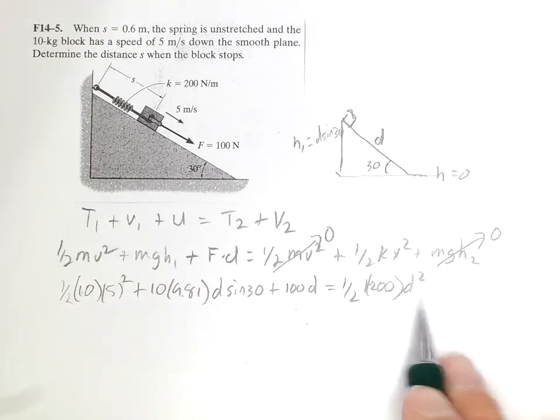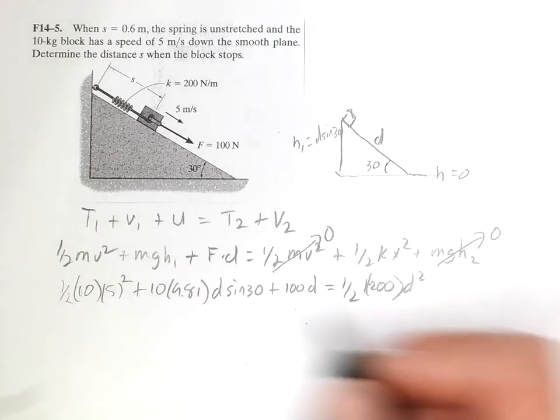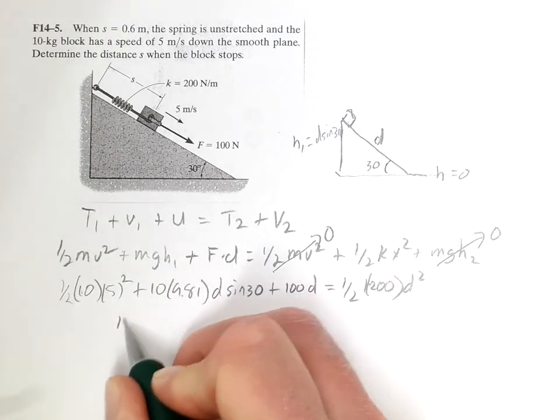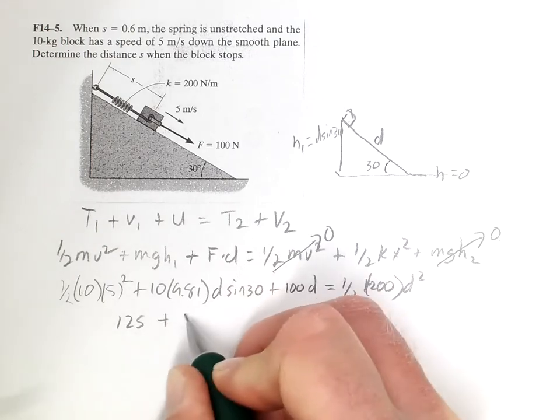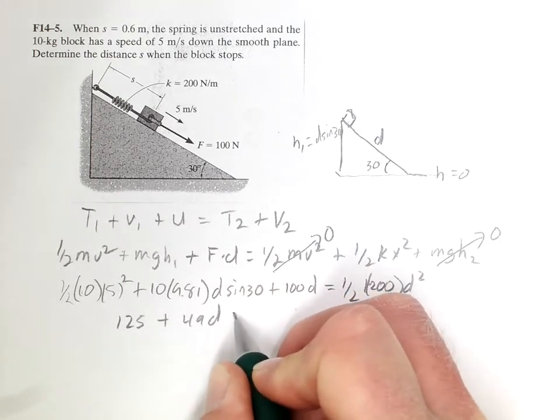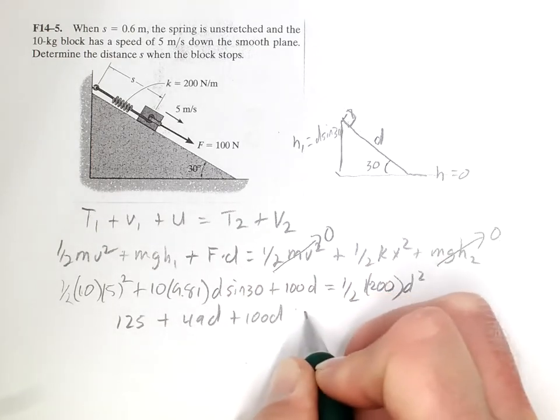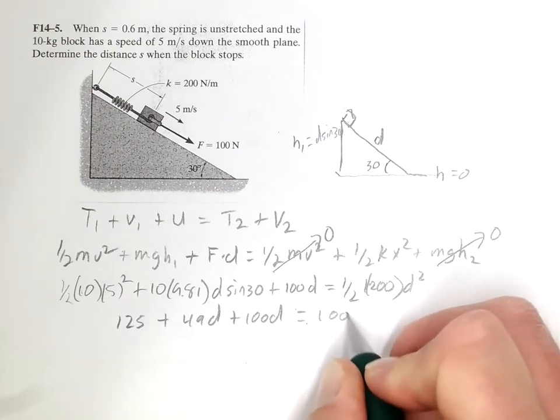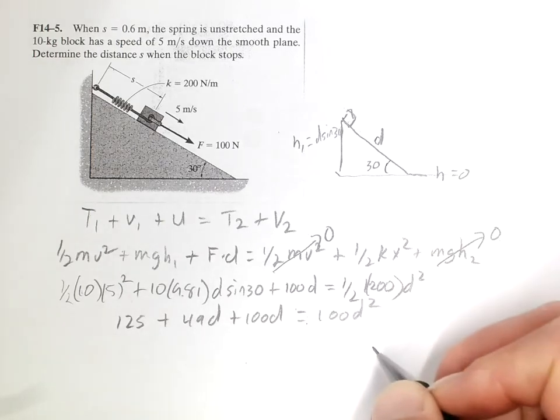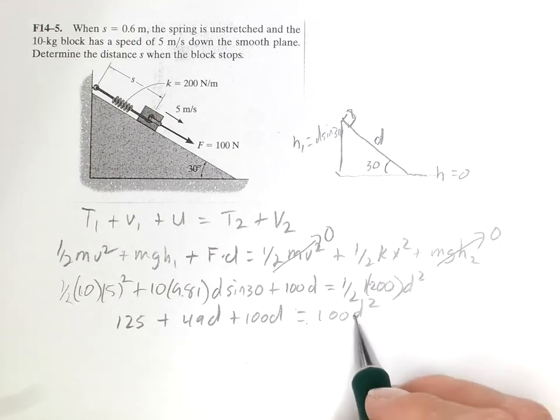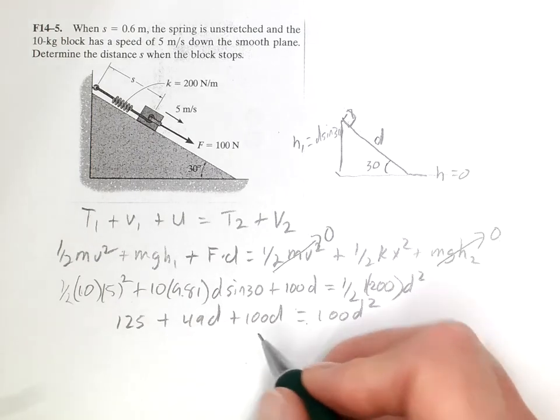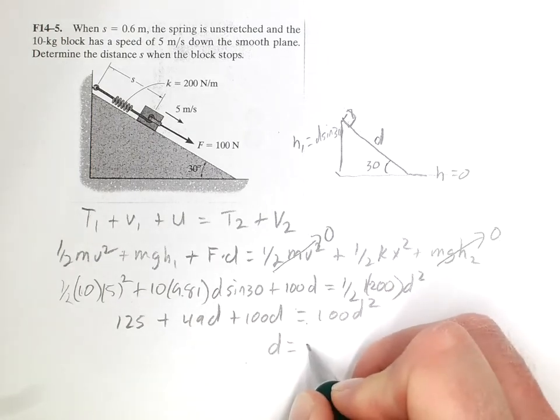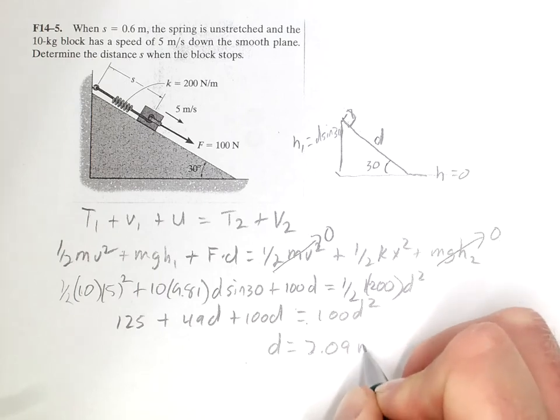So now we have an equation with just the function of D. Putting in values, we get 125 plus 49D plus 100D equals 100D squared. That is a quadratic, moving all to one side and solving. And D equals 2.09 meters.